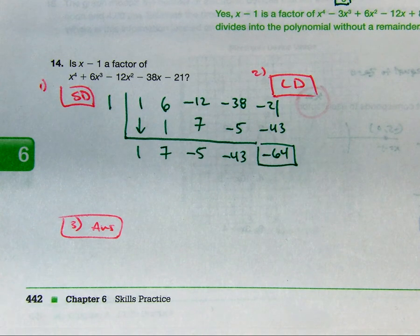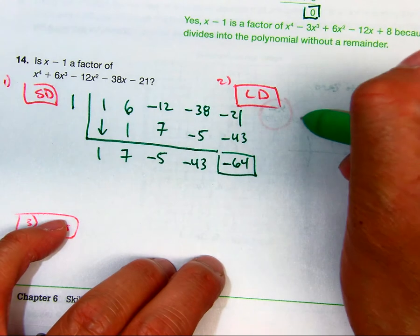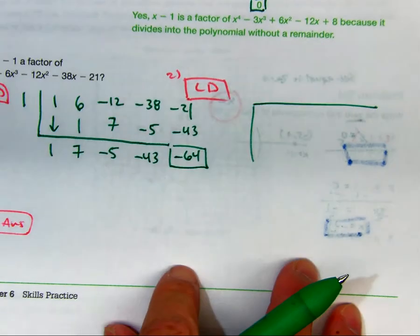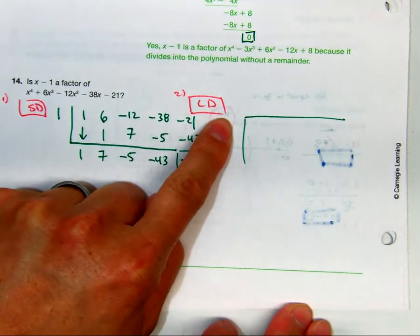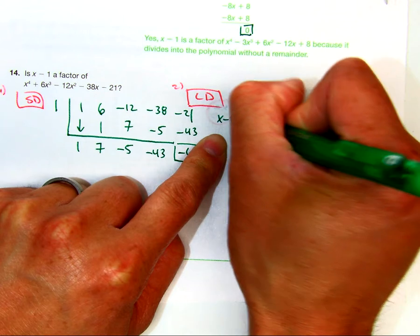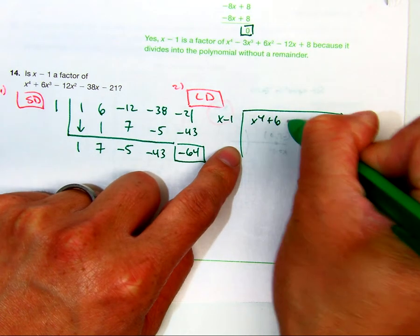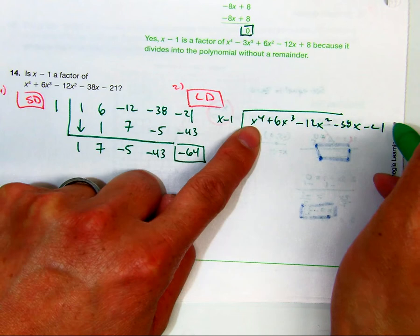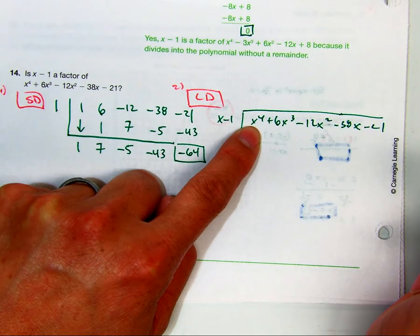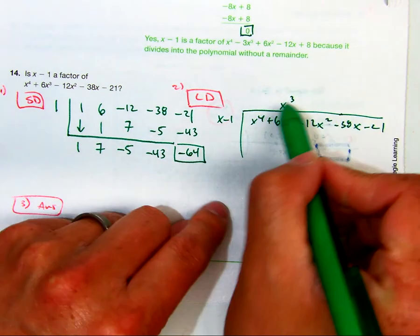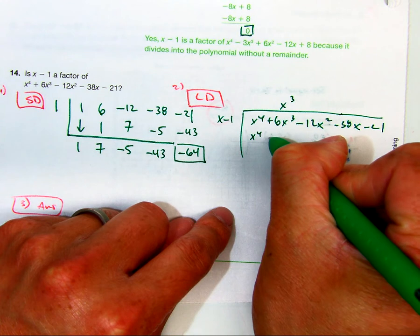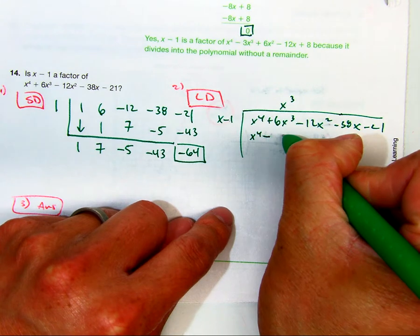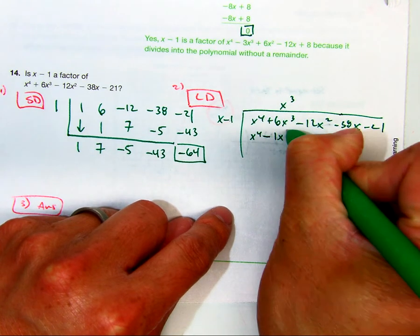Jeremiah, you get to do long division. Jeremiah, what am I going to write here? And I'm just going to write this for you. Jeremiah, how many times does x go into x to the fourth? x cubed. Multiply.